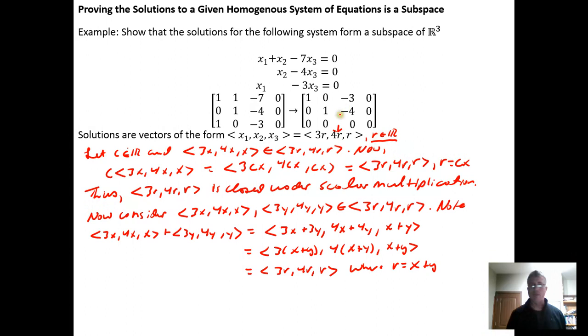So when we added the two vectors from the subset, we wound up with a vector that had the same form that's required for membership in the subset. This means that the subset is closed under vector addition.